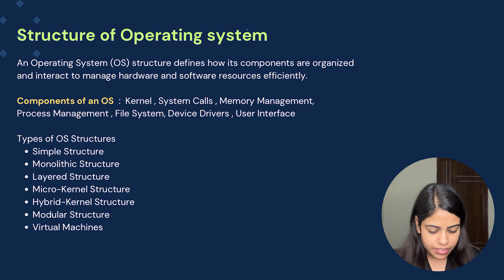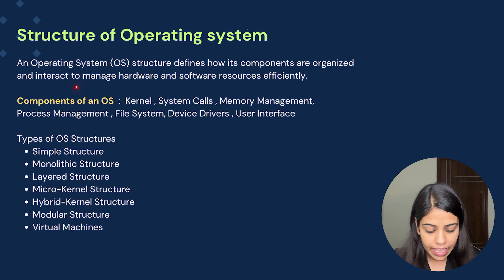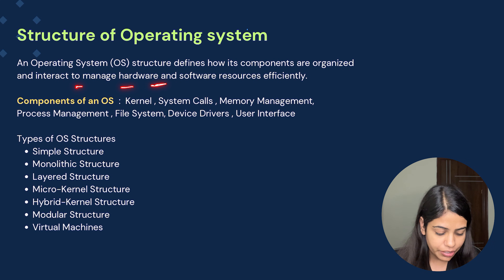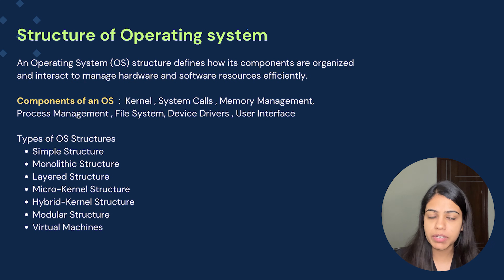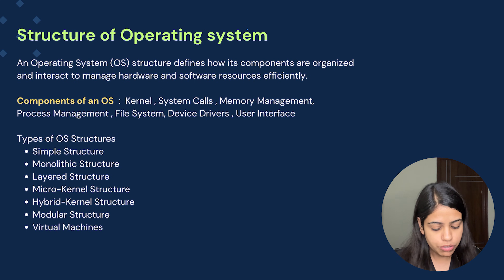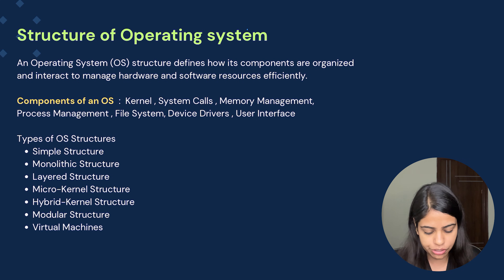An operating system structure defines how its components are organized and interact to manage the hardware as well as software resources efficiently. As I mentioned, the user interacts with the operating system and the operating system interacts with the hardware. Basically all these components are organized together as part of a structure so that there can be better communication.